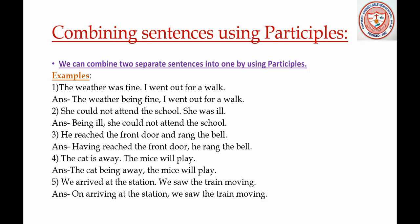Fifth example: 'We arrived at the station, we saw the train moving.' Using a participle, this becomes: 'On arriving at the station, we saw the train moving.' Here I have given a number of ways by which you can combine separate sentences into one by using participles.